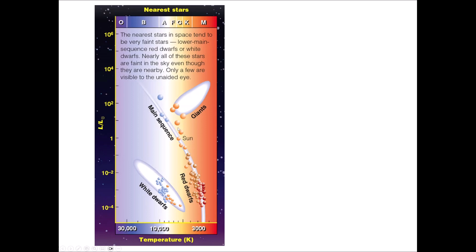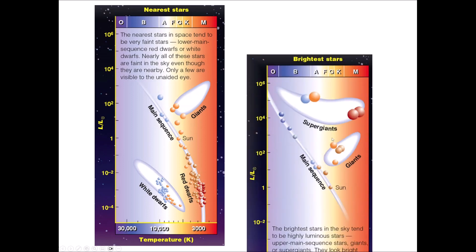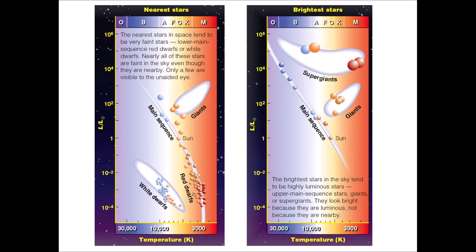The brightest stars HR diagram looks very different. The sun is almost unique, way down near the bottom. There's a handful of supergiants, handful of high-mass stars, some giants, some intermediate-mass stars, but no white dwarfs and no lower main sequence stars.